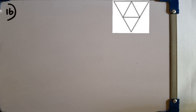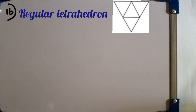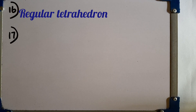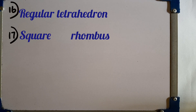Question number 16: name the solid which can be made using the given net. We can name the solid as a regular tetrahedron. Question number 17: name two types of quadrilateral of which all sides are equal in length. We can name the types as square and rhombus.